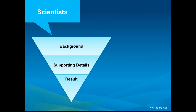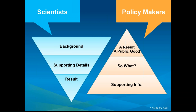But if we're trying to reach a policy-making audience — which many of us are involved with as we seek to push conservation and resource management objectives — the way they expect to be communicated to is often the opposite. It's an inverted triangle: they want to get right to the nugget, the result, up front. What is the public good that would come from that result? Then they may delve into the 'so what' factor and supporting details.